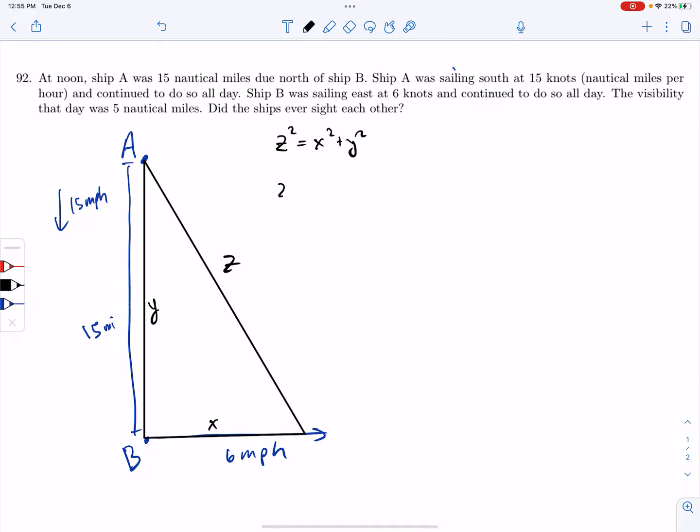Now, the issue is I want to write Z as a function of time because the distances, how far ship A has traveled and how far ship B has traveled are functions of time. So I want to rewrite this equation that I have for Z as a function in time. So what I need to do is I need to write X, the distance X as a function of time.